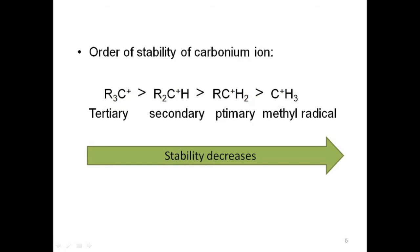Ab baat karte hain order of stability of carbonium ions. Yani, kaun sa carbonium ion kitna stable hai? Jitna stable carbonium ion hoga, utni hi jaldi SN1 reaction mein final product banegi. Tertiary carbonium ion, jo tertiary alkyl halide se banta hai, sabse zyada stable hota hai.